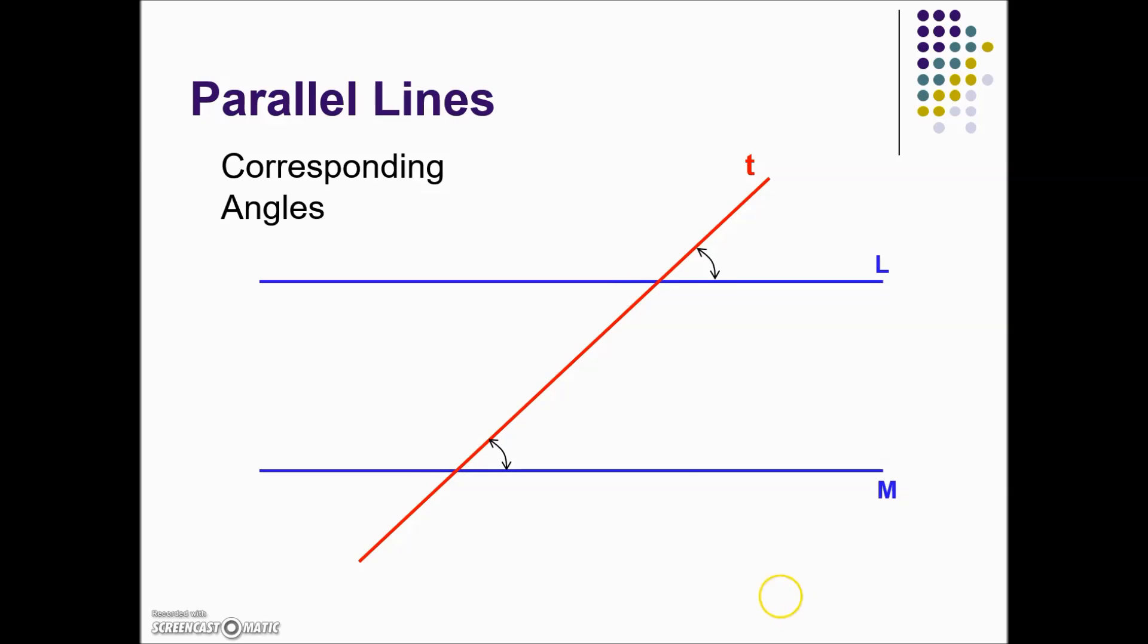Here's another example of corresponding angles. This angle is to the right of the transversal and above the parallel line, as is this angle in the lower half. It's to the right and above the second parallel line. These would be examples of corresponding angles which have equal measurement.